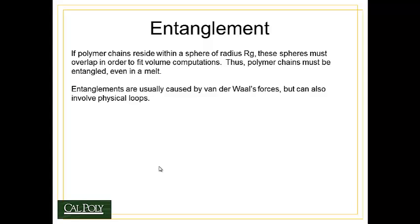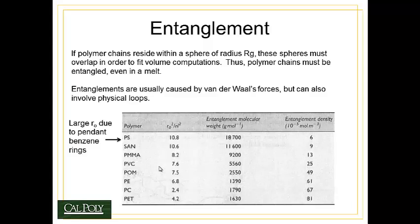Entanglement within a polymer is important because it determines the extent to which the polymer will resist flow, especially in the polymer melt state. If we assume that the polymer resides within a sphere of radius Rg, those spheres must overlap to fit volume computations — if they weren't overlapping, the polymer melt would take up more space than it actually does. Therefore they must overlap and entangle with one another. Entanglements are usually caused by van der Waals forces, but they can also involve physical loops where one polymer chain loops into another and physically locks together.